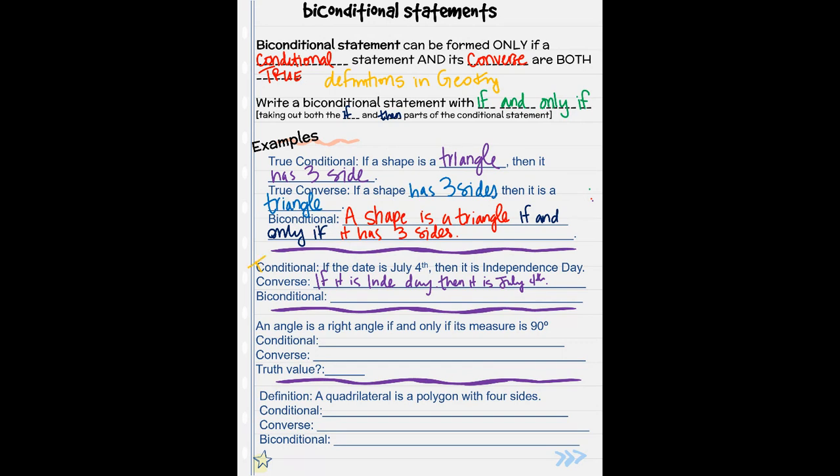If it is Independence Day in America, then it is July 4th in America. Yes, that is true. So I can write a biconditional statement. The date is July 4th if and only if it is Independence Day. If either of those were false, then I could not write that statement.